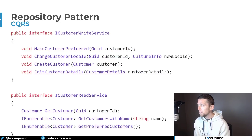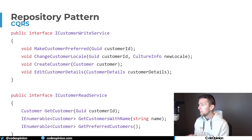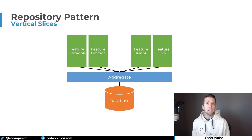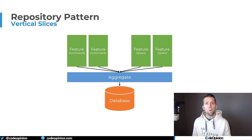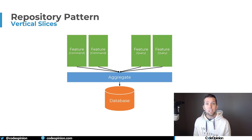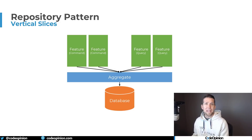One service is specifically doing state changes — commands — and the read service is just returning data without doing any state changes. I often think that most people implementing CQRS ultimately end up this way, because CQRS opens up a lot of different options. One of those things is organizing code and focusing on features rather than technical concerns, which leads to more of a vertical slice architecture.